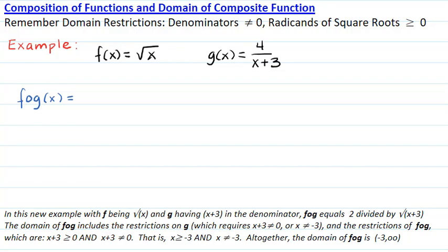In this new example, f of x equals the square root of x, and g of x has denominator x plus 3. The composite function f circle g of x equals f of g of x. Since f is the square root of x, we take the square root of g of x, replacing x with 4 over x plus 3.